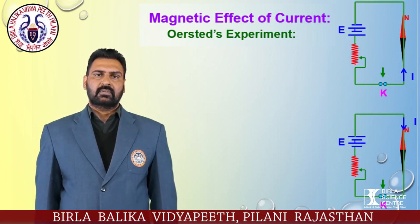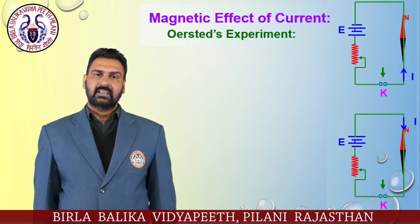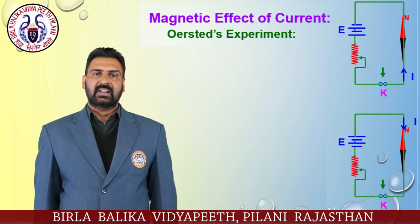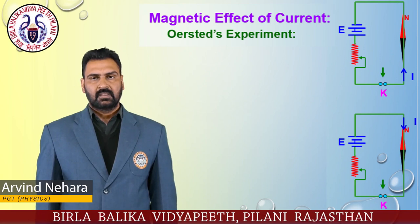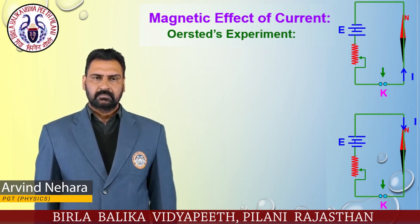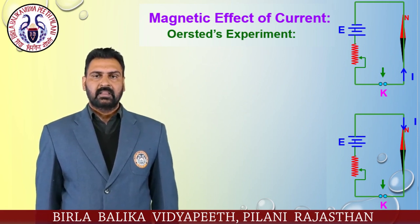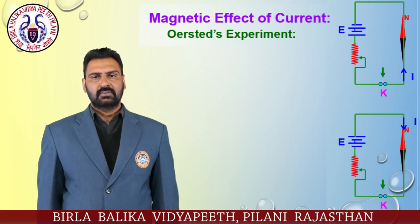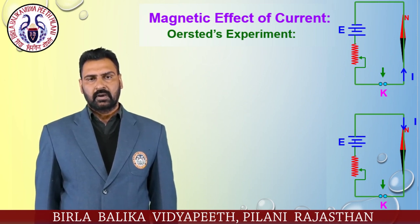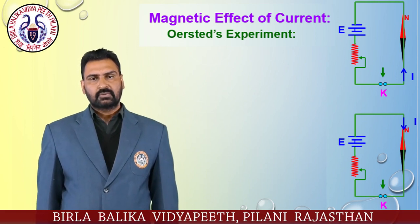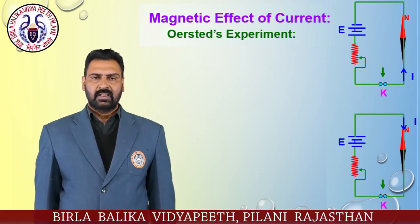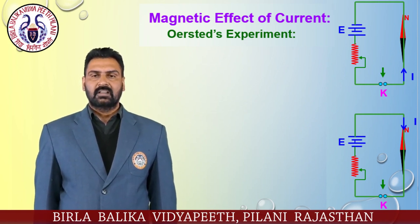An electric current produces a magnetic effect in the space around the conductor, called the strength of magnetic field or simply magnetic field. Oersted's experiment states that when current was allowed to flow through a wire placed parallel to the axis of a magnetic needle kept directly below the wire, the needle was found to deflect from its normal position as shown in figure 1. When the current was reversed through the wire, the needle was found to deflect in the opposite direction.